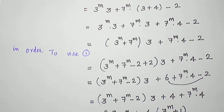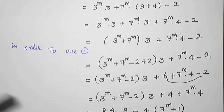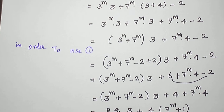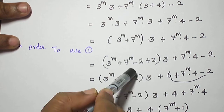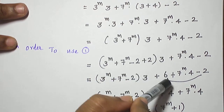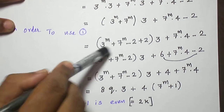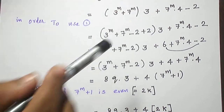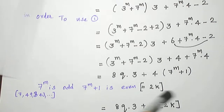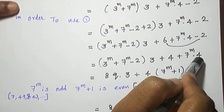In the induction step, we must compulsorily use the induction hypothesis, which is equation 1. When I multiply 3 inside the bracket, I get 3 power m plus 7 power m minus 2, and 3 into 2 is 6. Then 7 power m into 4 minus 2 is written separately. Now 3 power m plus 7 power m minus 2 — we make use of equation 1, written as 8 into q. And 6 minus 2 is written as 4.